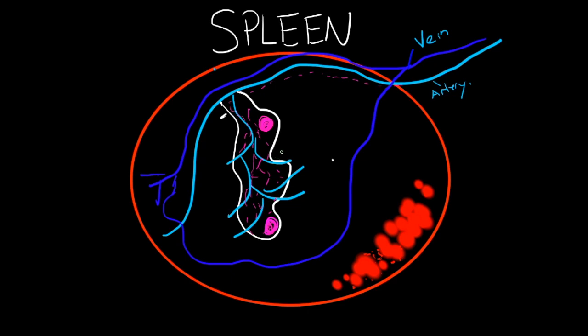Dendritic cells trap these antigens and then transport them to what's called the white pulp. The white pulp is right here.